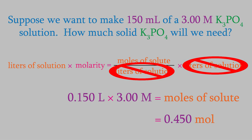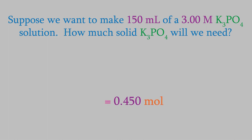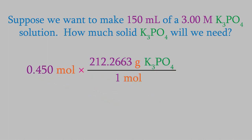To get grams, we convert using masses from the periodic table. One mole of potassium phosphate weighs 212.2663 grams, so we put one mole in the denominator and the mass on top. We get 95.5 grams — that's how many grams of potassium phosphate we need. Notice we have three sig figs, because that's how many were in the least significant number we started with.